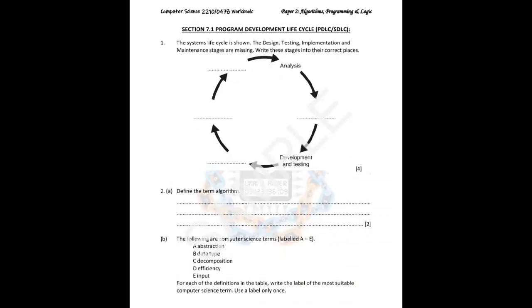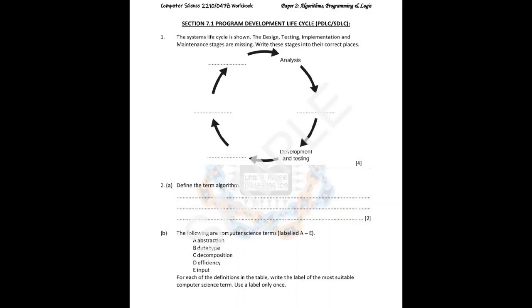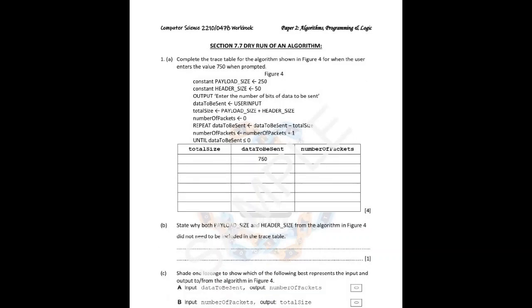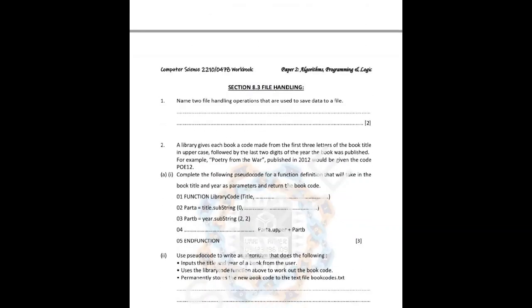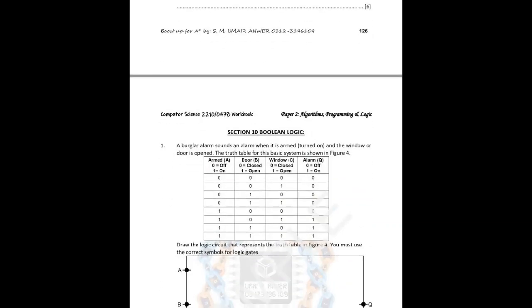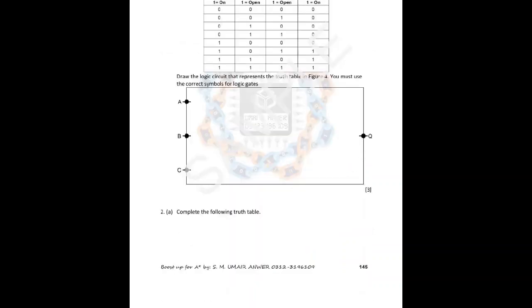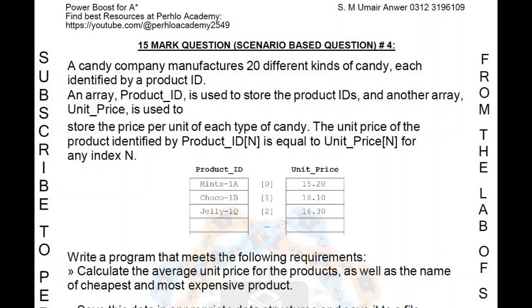These are a few pages from the Paper Two workbook to give you a glimpse of what's included — sections 7.1, 7.7, 8.3, and section 10 on Boolean logic. A lot more questions are included — a must buy if you want a very good score in your Cambridge examination. Order now. Assalamualaikum warahmatullahi wabarakatuh; I hope you guys are doing fine.